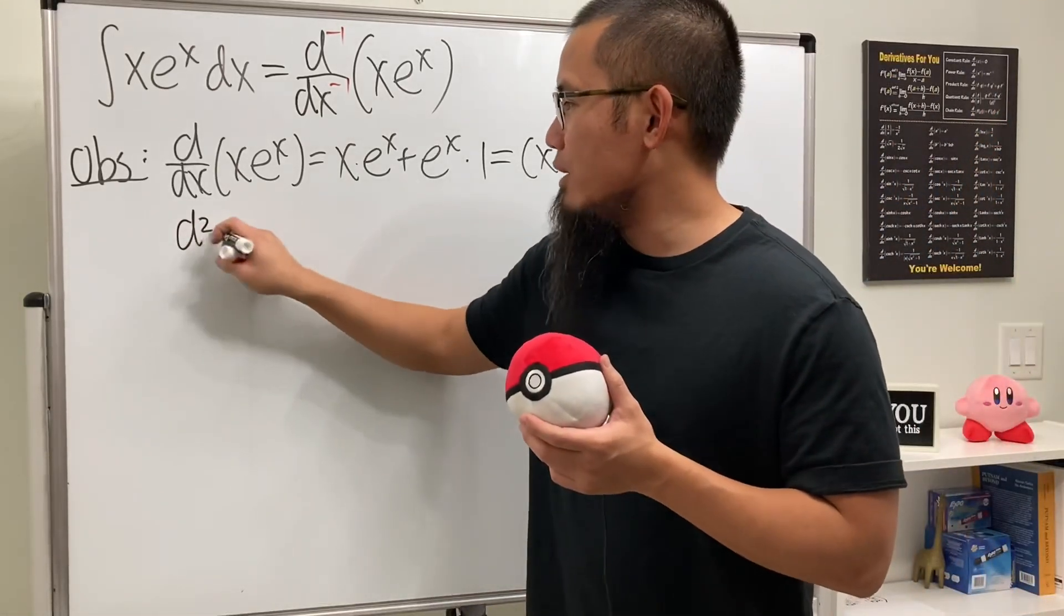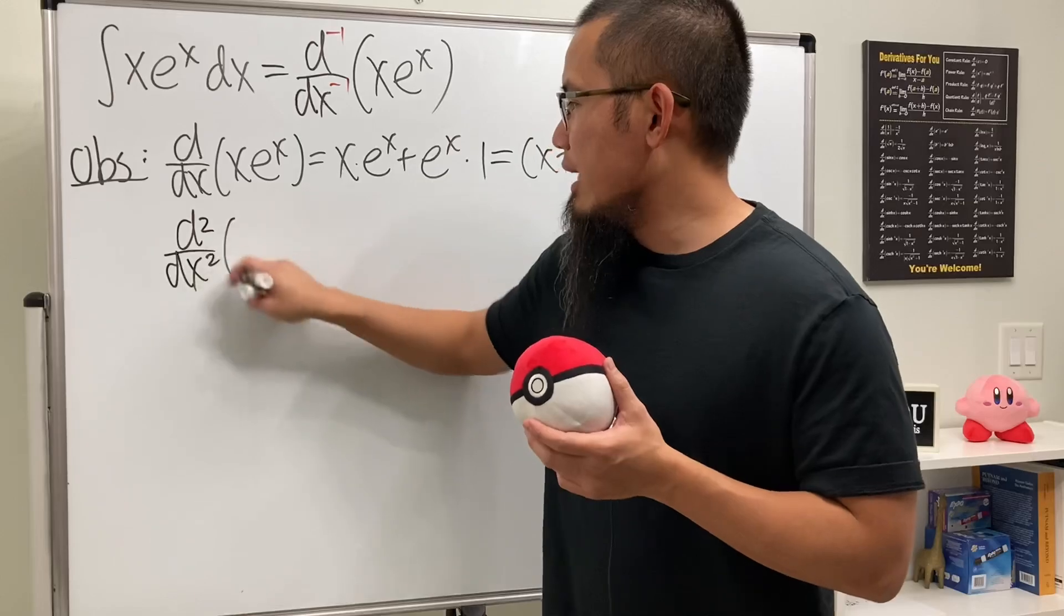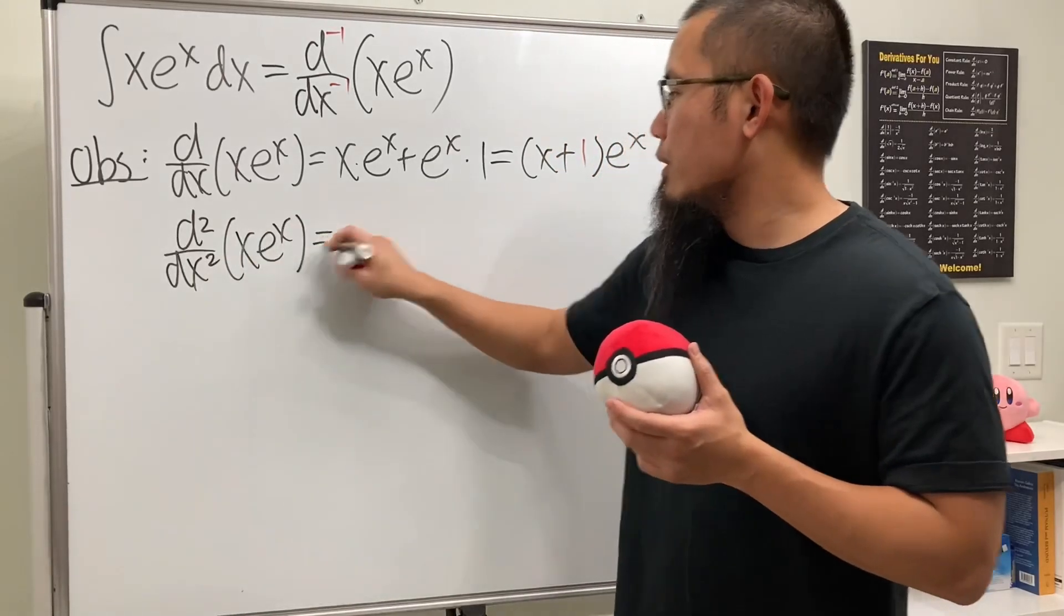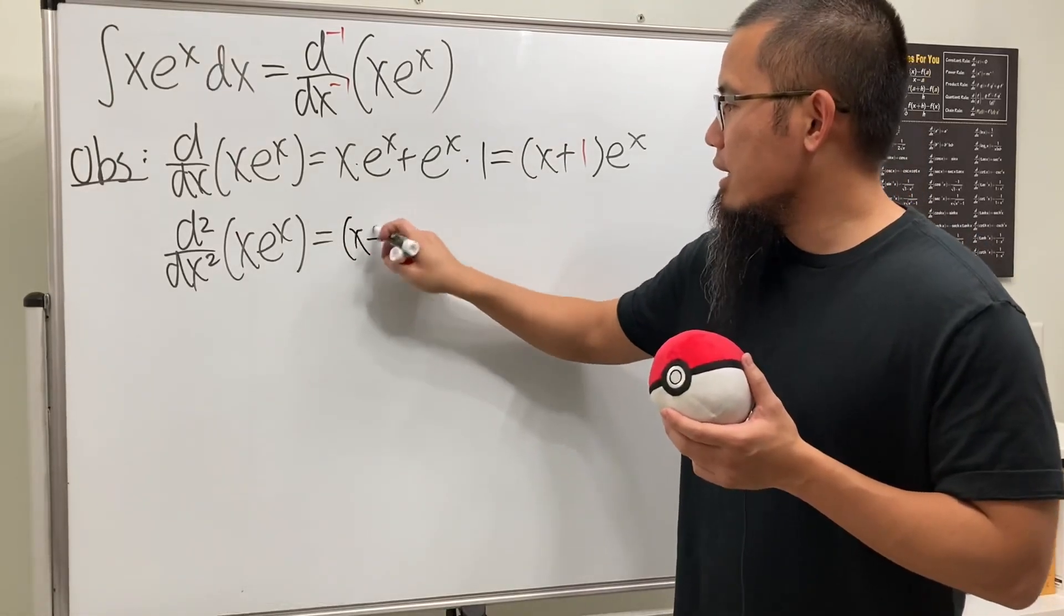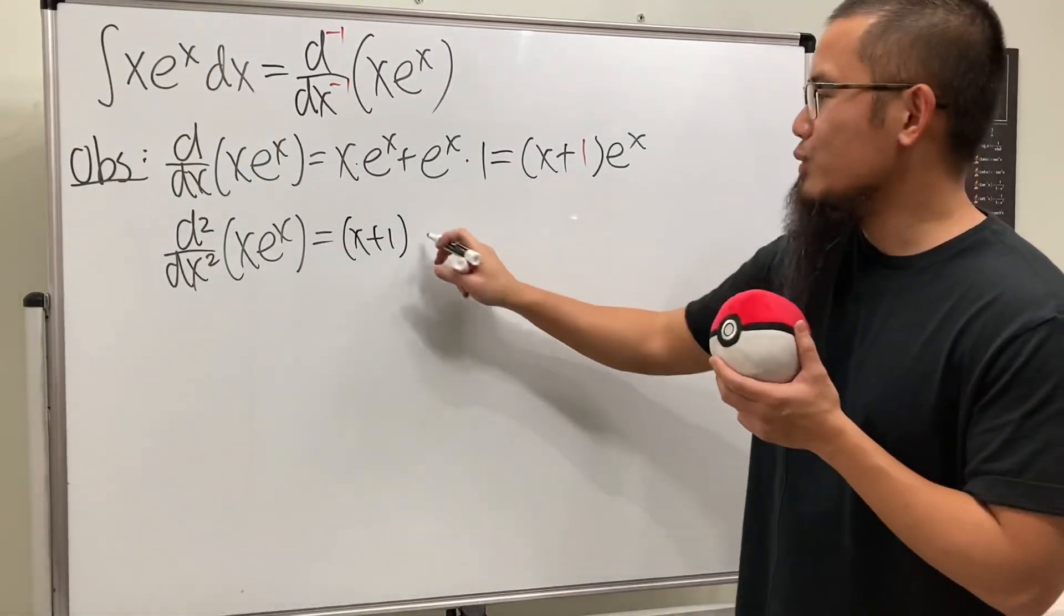And now let's do it again. So here we have d^2/dx^2, and we get, well, look at this right here. So here, this is the first function, let's keep that. And then we multiply by the derivative of the second, which is e^x.